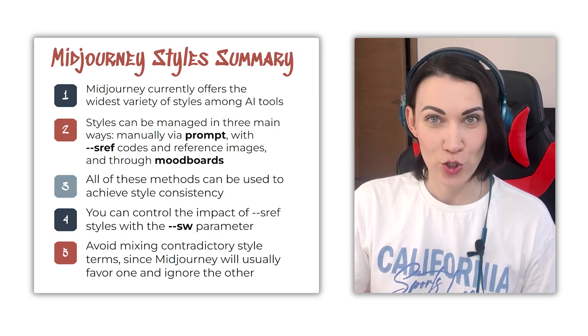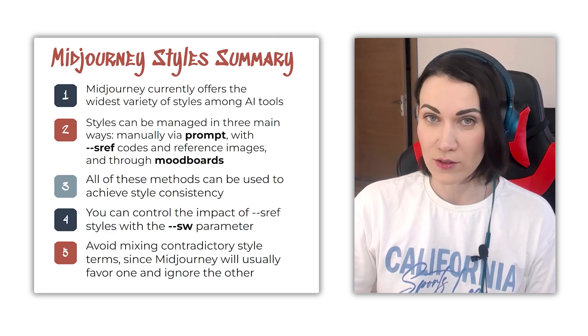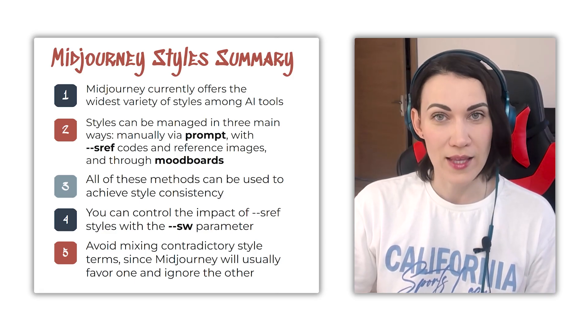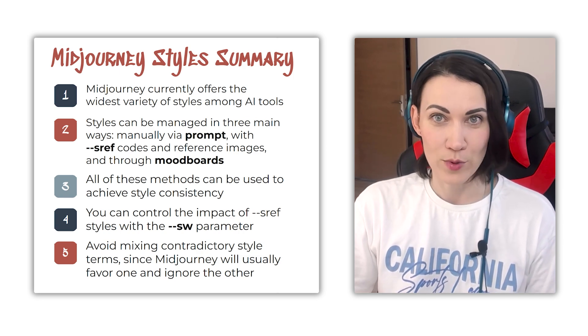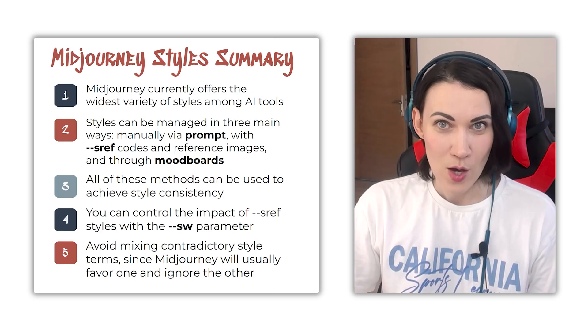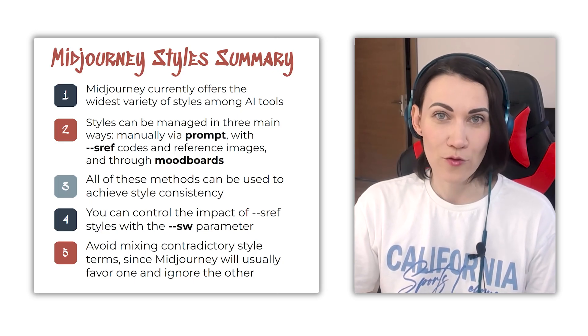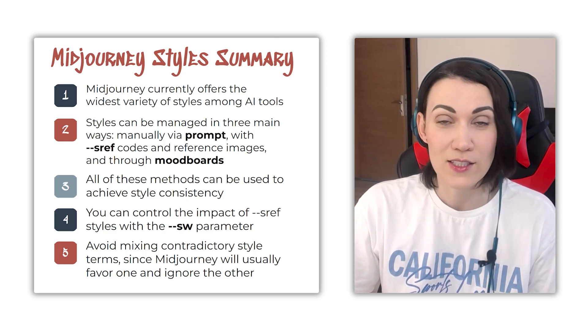Let's sum up what we've learned. Midjourney currently offers the widest style variety on the market. Styles can be controlled in three ways: manually via prompt, with sref codes and reference images, and through mood boards. All these methods can be used to achieve style consistency. You can control the impact of sref styles with the style weight parameter. And avoid using contradictory style terms — Midjourney just tends to favor one and ignore the other. This was a big tour through Midjourney styles and I hope you learned something new. Don't forget to like, share, and subscribe — your support means the world to us. Thank you for watching and see you in the next one.